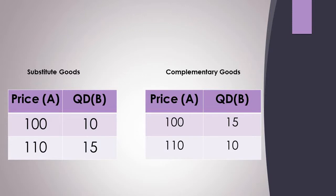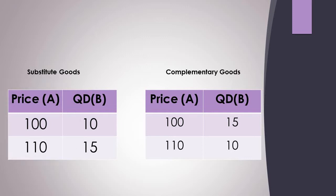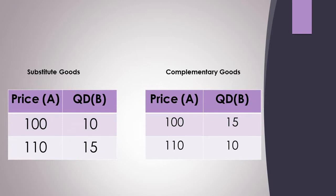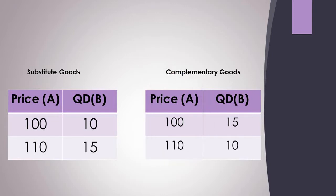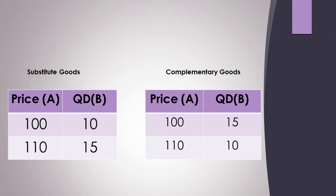Looking at the schedules — for substitutes, tea and coffee: price changes from 100 to 110, and quantity demanded of B increases from 10 to 15. This confirms the positive relationship. For complementary goods, price of A increases from 100 to 110 while quantity demanded of B decreases from 15 to 10, confirming the inverse relationship.